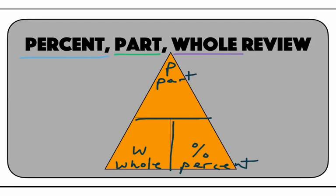Now the last thing we need is to figure out which operation. We put them in the right place in the triangle. I'm going to put a big division sign right under the part — that means any time we have a part and we're trying to solve for anything else, we're going to divide. Then I'll throw a multiplication sign right there in between my whole and the percent. So any time you're presented with a percent, part, whole question, draw this triangle. If you can remember where to put the P, the W, the percent, division, and multiplication, this can really help you solve these accurately.